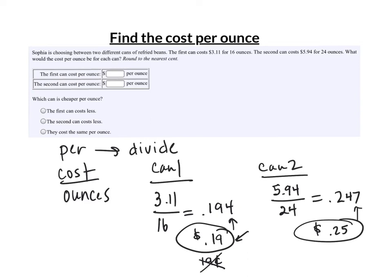So can one is nineteen cents per ounce and can two is twenty-five cents per ounce. Can one is cheaper. In this box we put point one nine and this box we put point two five, and we know that the first can cost less per ounce.